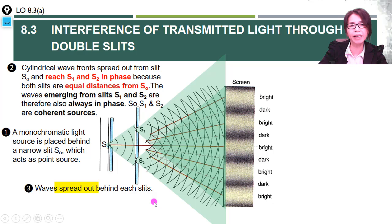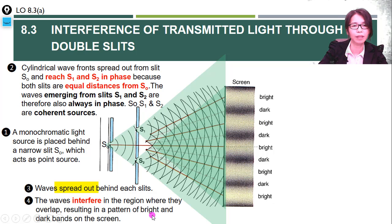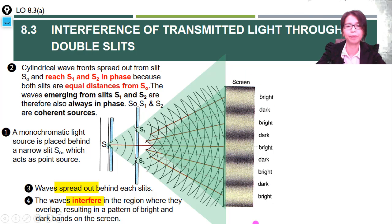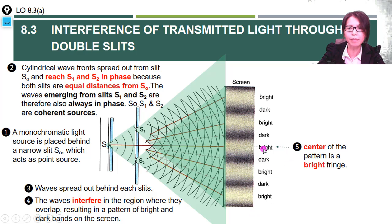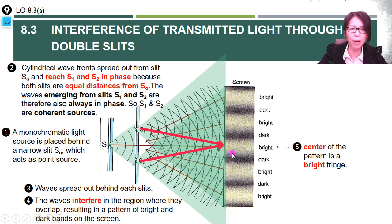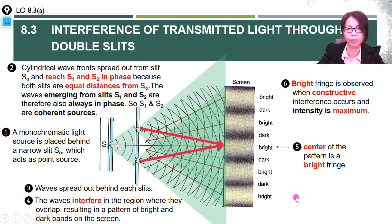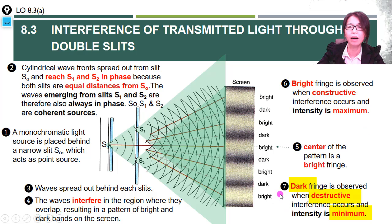The waves will spread out behind each slit and interfere in the regions where they overlap, resulting in a pattern of bright and dark bands on the screen. The center of the pattern is always a bright fringe because this point on the screen is equidistant from S1 and S2. Bright fringes are observed when constructive interference occurs and the intensity is maximum. Dark fringes are observed when destructive interference occurs and the intensity is minimum.